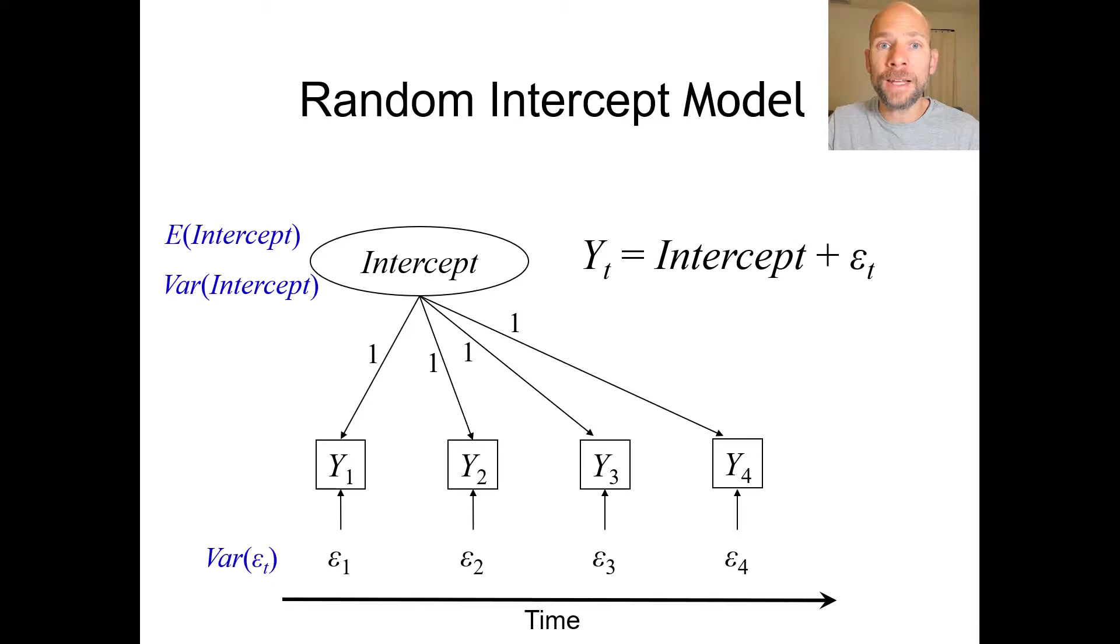And then finally, we estimate an error variance parameter for each time point for the error variable. So variance epsilon t is estimated four times here, which could reflect differences in the reliability. Sometimes, for example, at the first measurement occasion, there is more measurement error variance, there's more unreliability because participants have to get used to the procedure at the beginning of a longitudinal study and they may be more nervous.